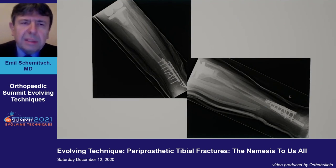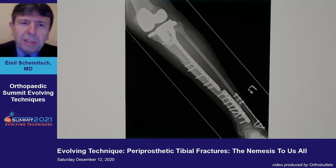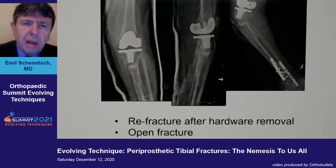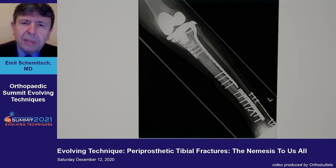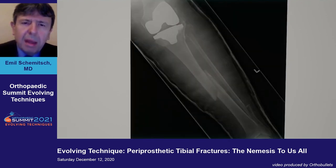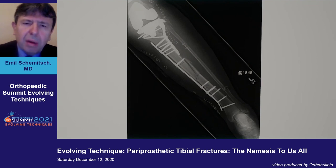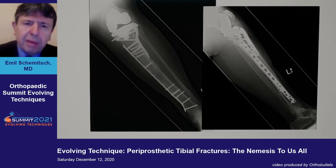Here are some examples. This is a case of a difficult interprosthetic fracture in an osteoporotic patient. This patient required a lateral plate, went on to heal, but had some wound healing issues and the plate had to be removed. The patient went on to a refracture that was open and required dual plate fixation. This next patient has a segmental fracture — a type 1 fracture at the plate proximally and a mid-shaft fracture distally — managed with two overlapping plates with spaced fixation in the shaft, and this patient went on to uneventful union.